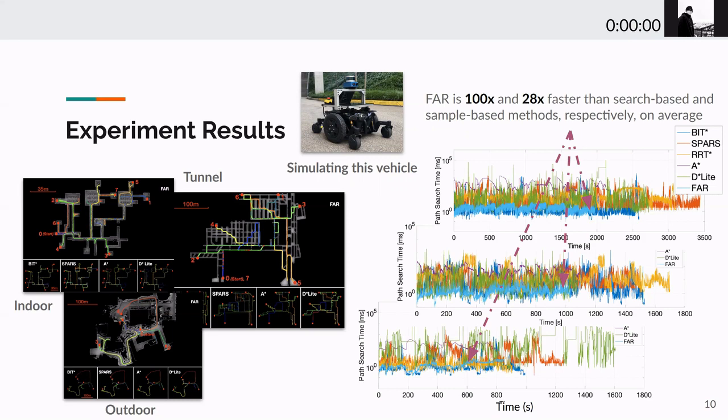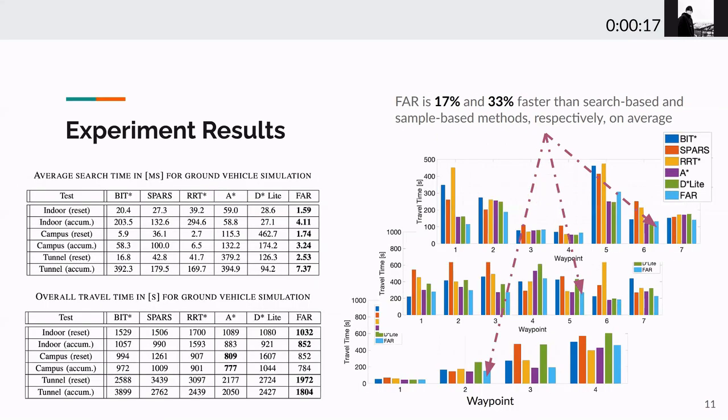We further compare the travel time for the robot to reach the goal. The results show our method is 17% faster than search-based method, and 33% faster than sample-based method, in terms of overall travel time to finish the several goal segments.